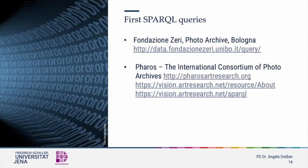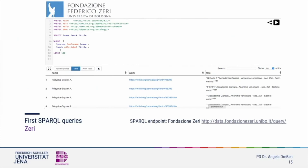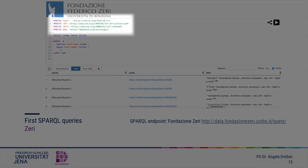Let us start with some simple queries using the two cultural heritage endpoints of the Fondazione Zeri and FAROS. The Fondazione Zeri is a photo archive in Bologna, Italy. FAROS is a consortium of 14 photo collections, and its endpoint combines the collections through one search entry. We start by analyzing a simple SPARQL query — you will recognize several prefixes referring to different ontologies. It does not matter how many prefixes are listed, as long as the ones you use in your query below are listed among them.